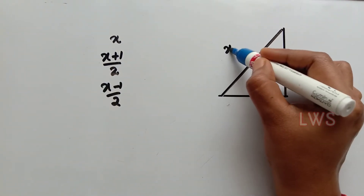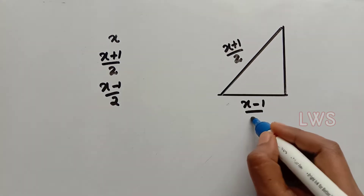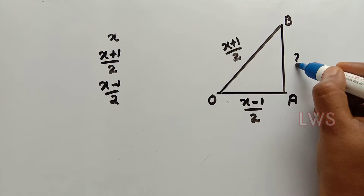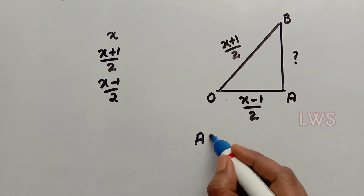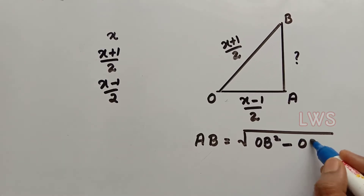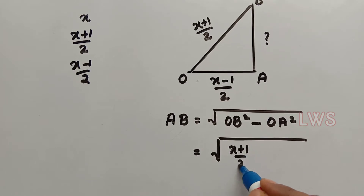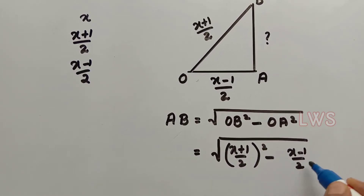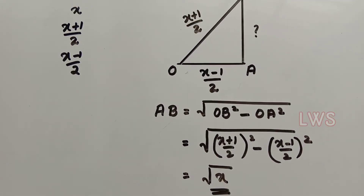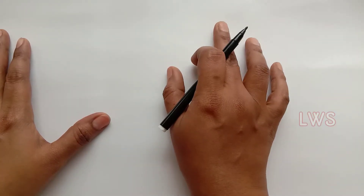Consider a right triangle with (x plus 1 by 2) as the hypotenuse and (x minus 1 by 2) as the base, named OAB. Now we have to find AB. By Pythagoras theorem, AB equals square root of OB² minus OA², that is square root of (x plus 1 by 2)² minus (x minus 1 by 2)², which we know equals square root of x. So if we construct a right triangle with (x plus 1 by 2) as the hypotenuse and (x minus 1 by 2) as the base, then the altitude will be the length root x.